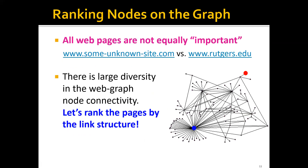The idea, as you may have noticed, is to rank the nodes on the graph. Obviously all web pages are not equally important — comparing some unknown website with the Rutgers homepage, the Rutgers homepage is much more important. Since there is large diversity in the web graph's connectivity, let's rank pages by their link structure. For example, in this part of a web graph, the blue node is connected to a lot of other web pages, but the red node is only connected to one page — therefore the blue node is much more important than the red node.